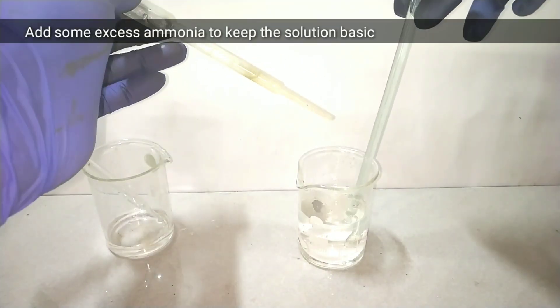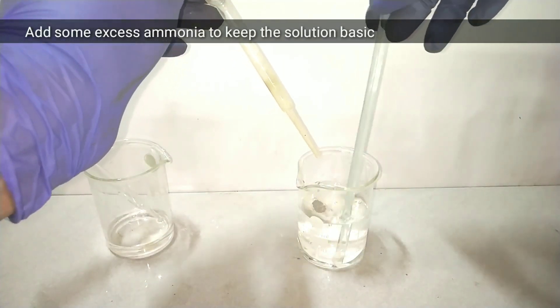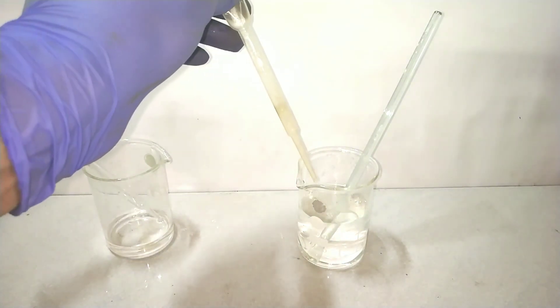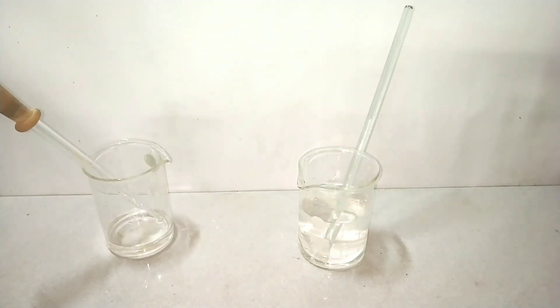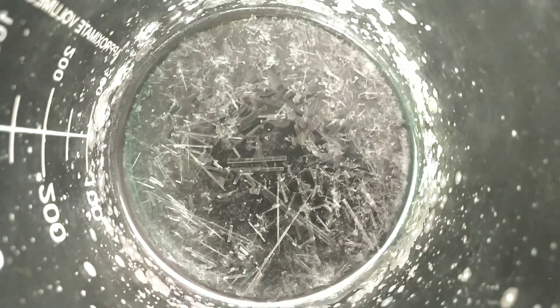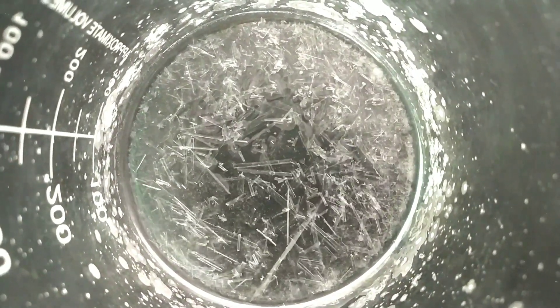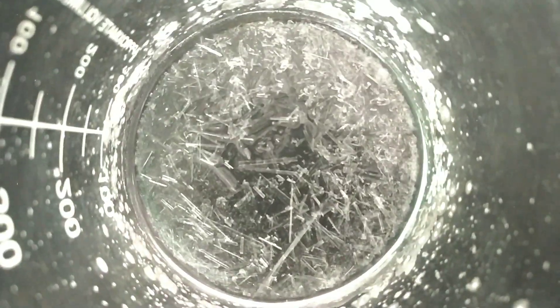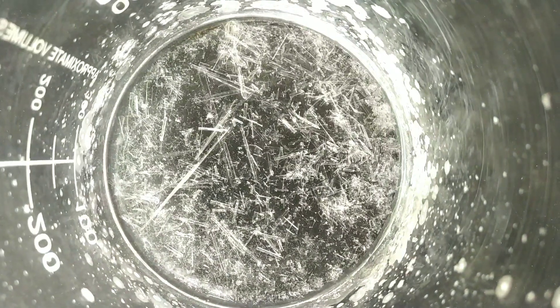After complete neutralization has taken place I will add some excess ammonia to keep the solution basic. Only then we will get the crystals. I then transferred the solution into numerous beakers and let them evaporate in the sun, and on evaporation we get these needle shaped crystals of ammonium sulfate.